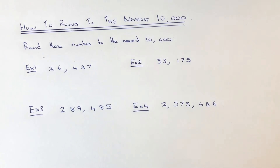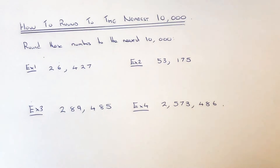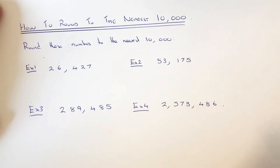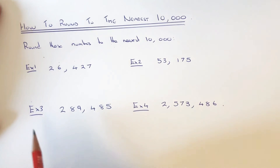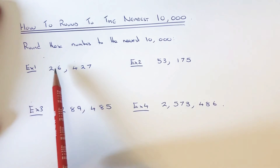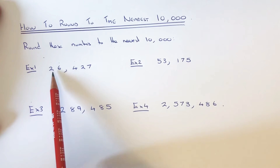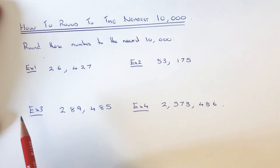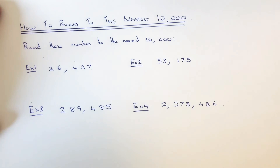Hi guys, welcome back. I'm going to show you how to round any number off to the nearest ten thousand. Let's go straight into the examples. Example one: round 26,427 to the nearest ten thousand. To do this, first of all you need to identify the tens of thousands column.